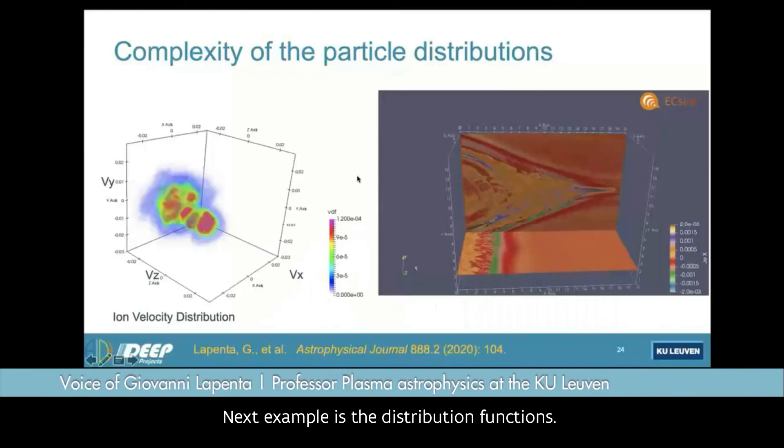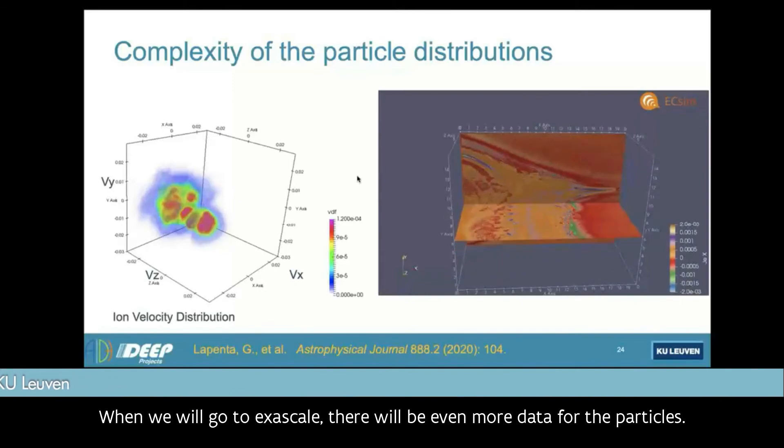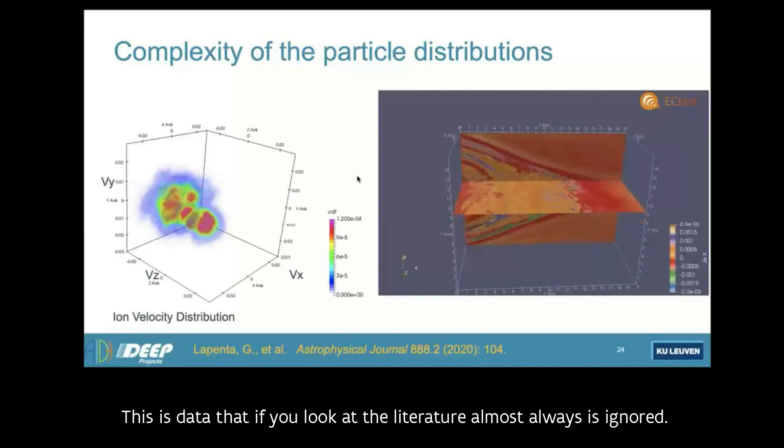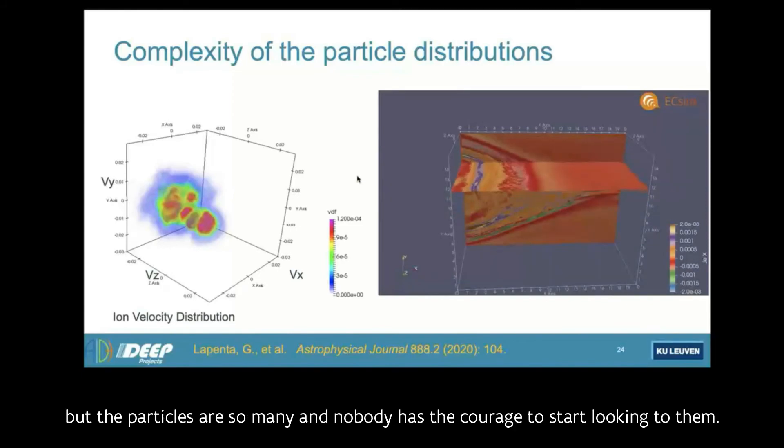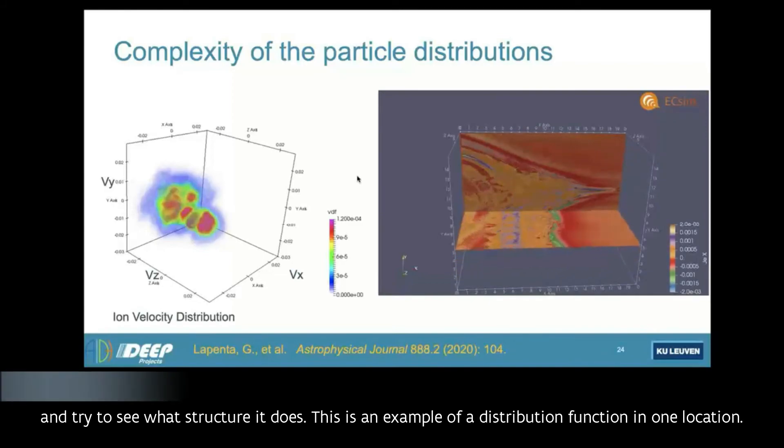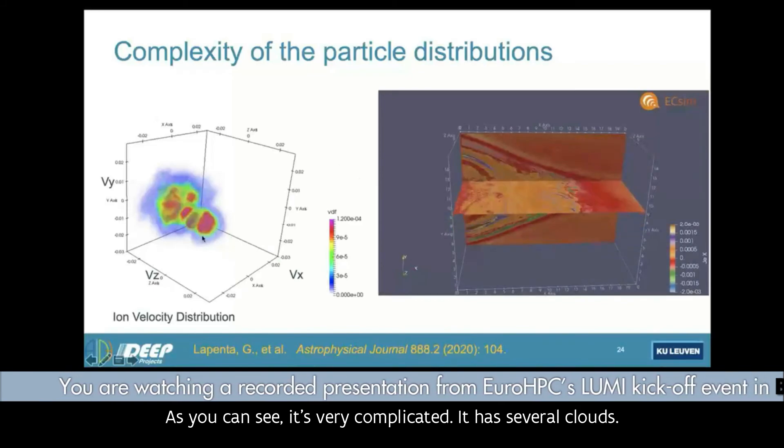Next example is the distribution functions. As I mentioned, there are terabytes of data for each time step, even at this level. When we will go to exascale, there'll be even more data for the particles. This is some data that if you look at the literature, almost always is ignored because people focus on the things which are manageable, but the particles are so many that nobody has the courage to start looking into that. That's why you need machine learning again, because machine learning can look at the distribution functions in each location and try to see what structure it has. This is an example of a distribution function in one location. As you can see, it's very complicated. It has several clouds. Each one maybe can be modeled as a Gaussian, but there are very many of them. How many in each location would be a different number. Very complicated.